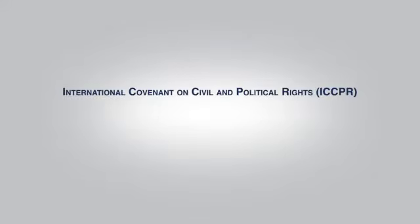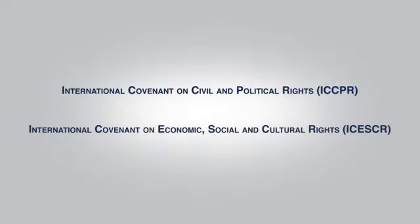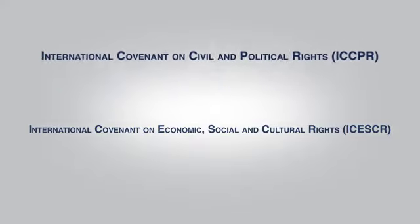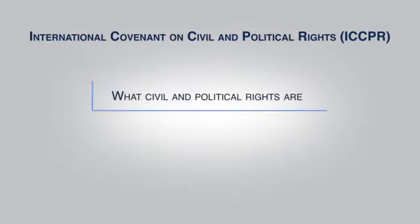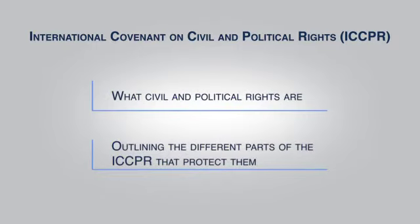After discussing the arguments for and against the need to distinguish between the two types of human rights and their corresponding covenants — civil and political versus economic, social, and cultural — you will focus on the former, learning to specify what civil and political rights are and outlining the different parts of the ICCPR that protect them.